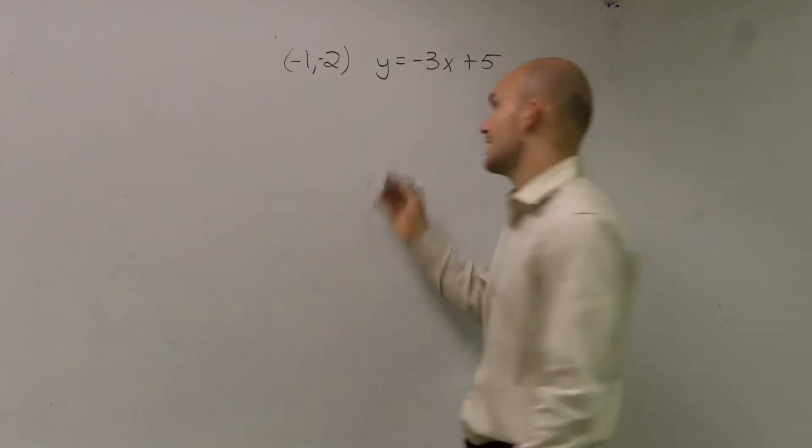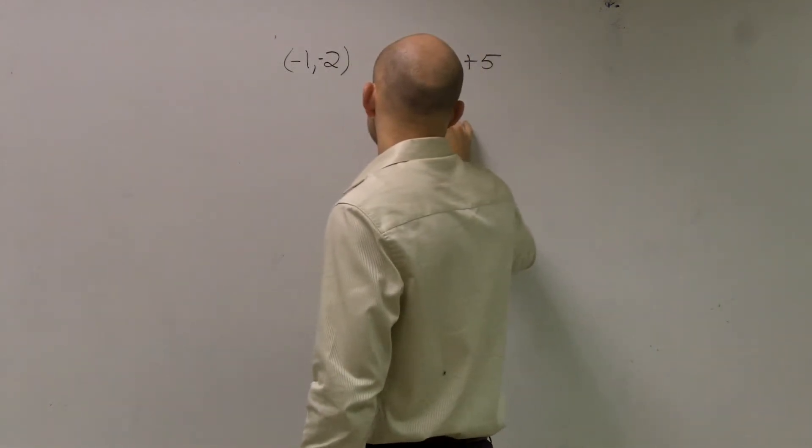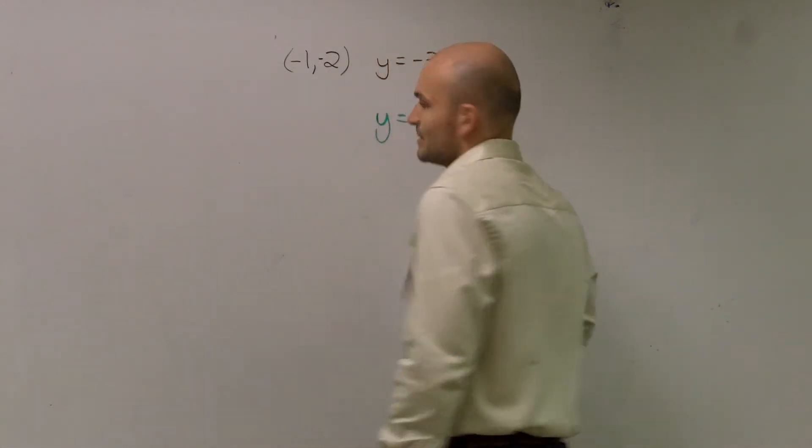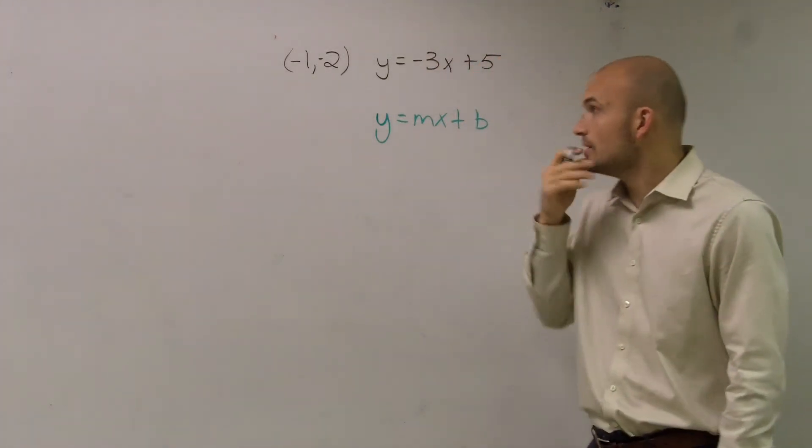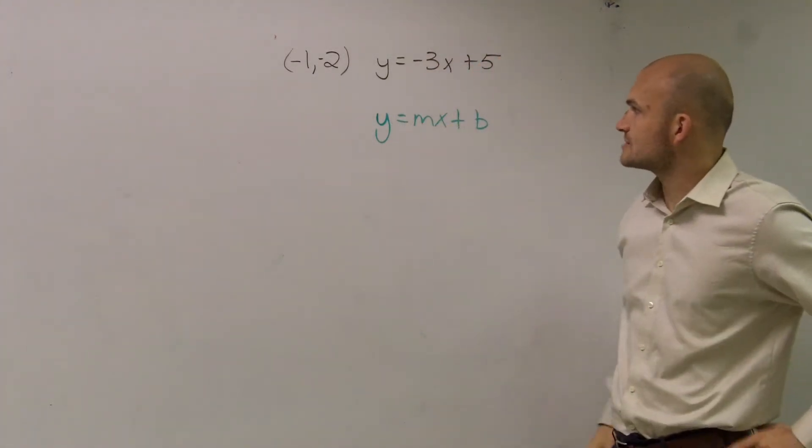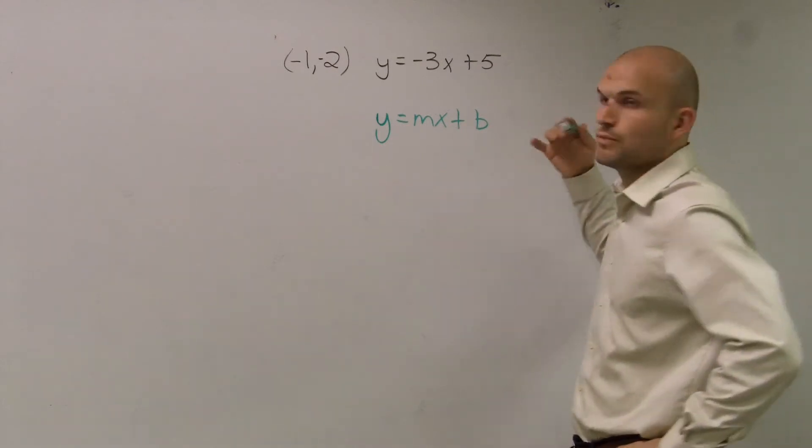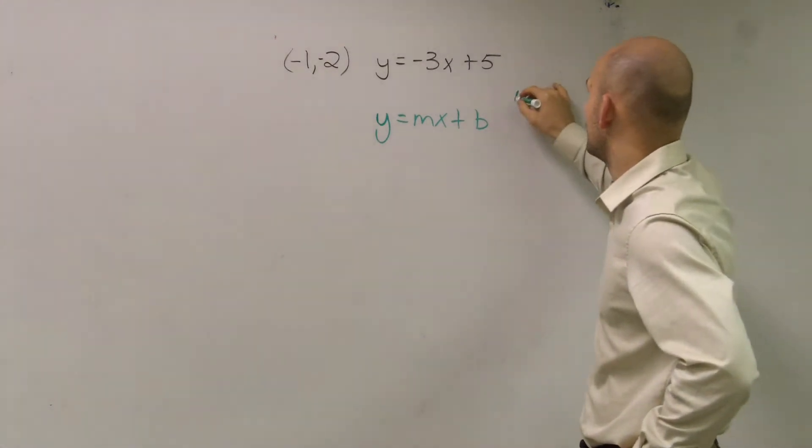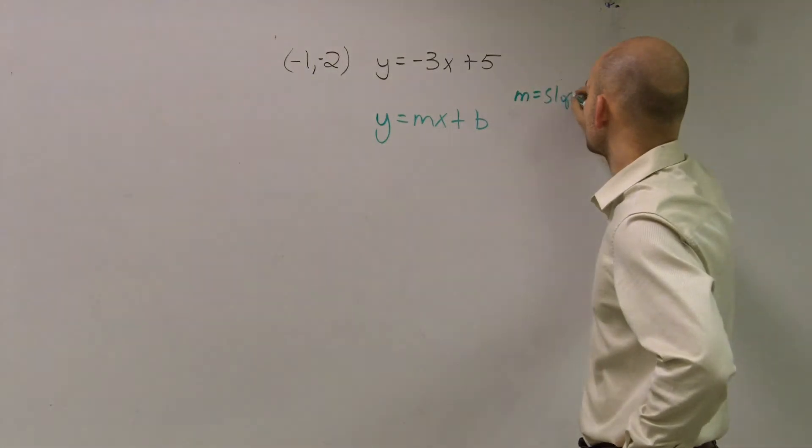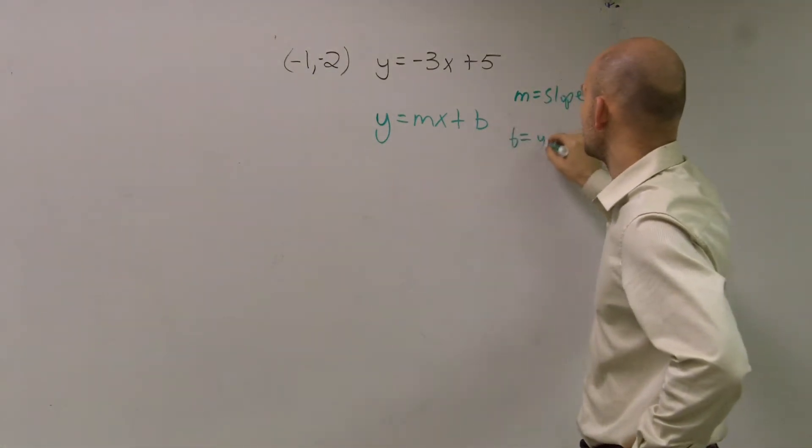whenever we're writing an equation of a line, we know that we're going to write it in y equals mx plus b format, right? So if I have my equation y equals mx plus b, the first thing we need to know is what do m and b represent? Well, m represents your slope, and b represents your y-intercept.